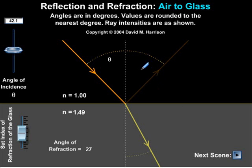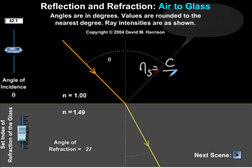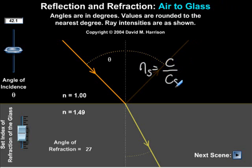Therefore, the refractive index of a substance is equal to the speed in air, which is 3 times 10 to the 8 meters per second, divided by the speed in the substance.